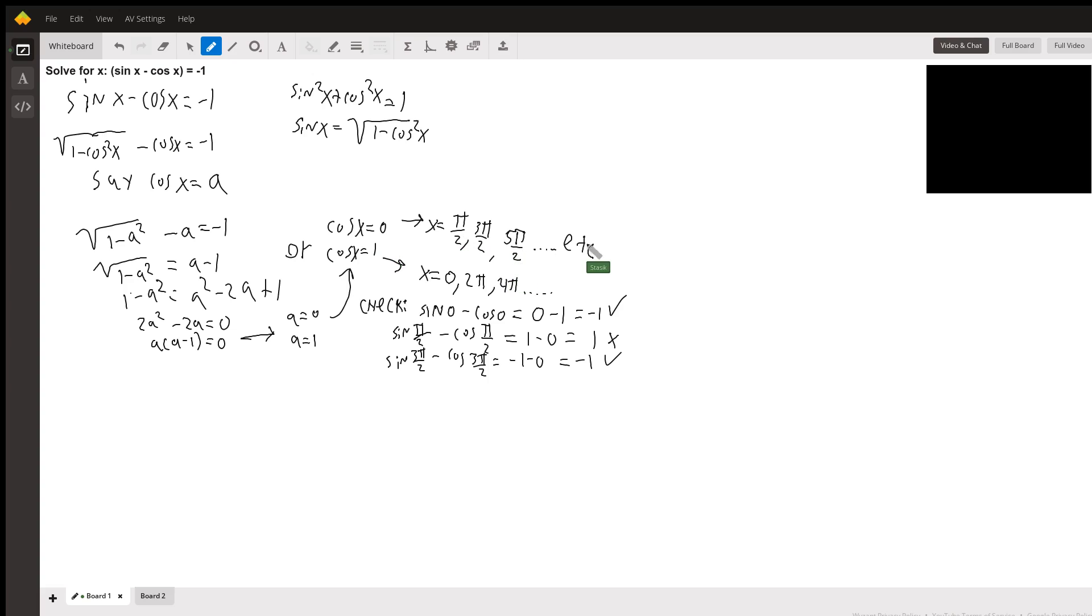So for cosine of x equals zero, this means that x is pi over two or three pi over two or five pi over two, etc. For cosine x equals one, this can be zero, two pi, or four pi radians, etc.